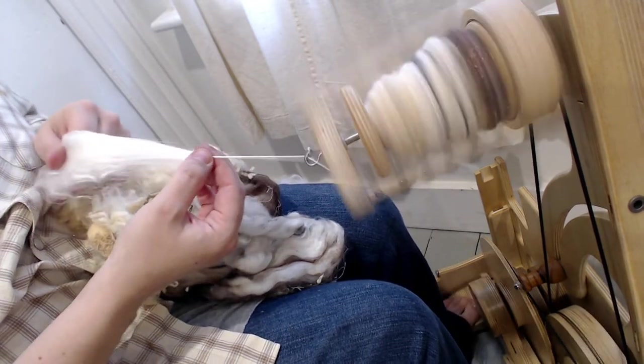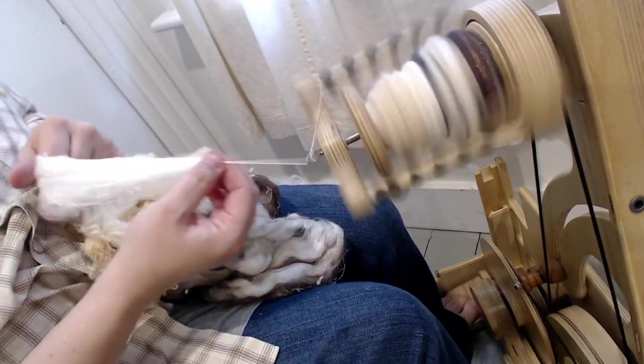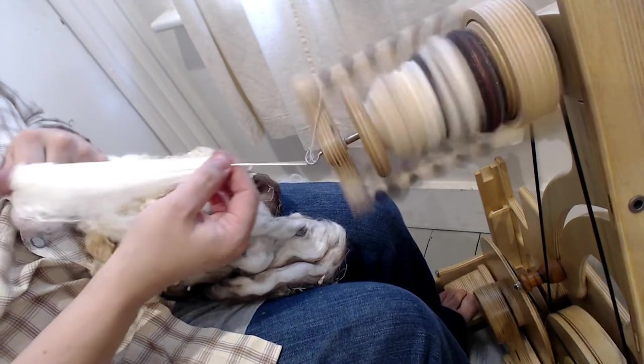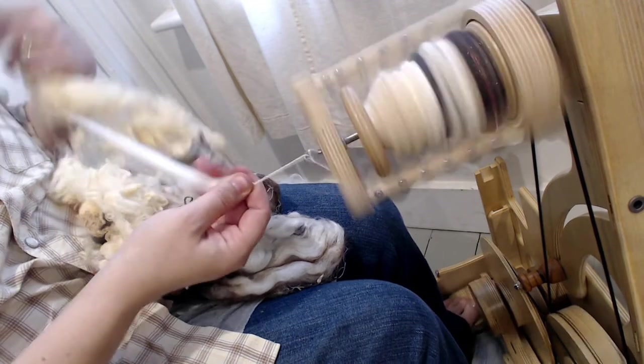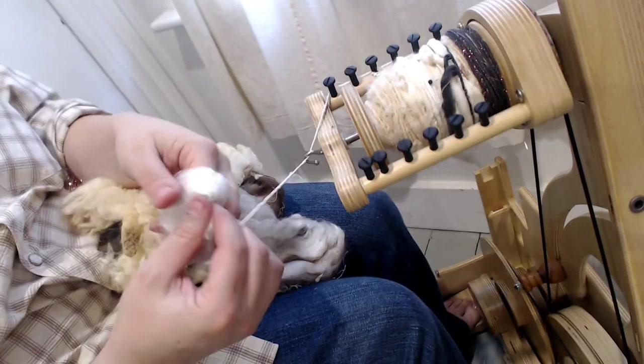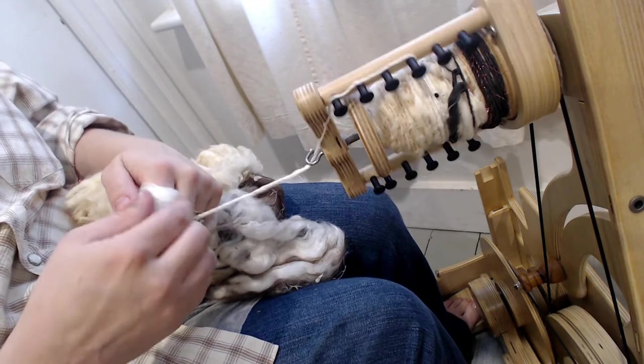Silk is a very slippery fiber to spin so if you end up struggling with it breaking or falling apart you can spin from the fold which means you just loop the fiber over your finger and you bring a little bit out from that bump and spin from that.